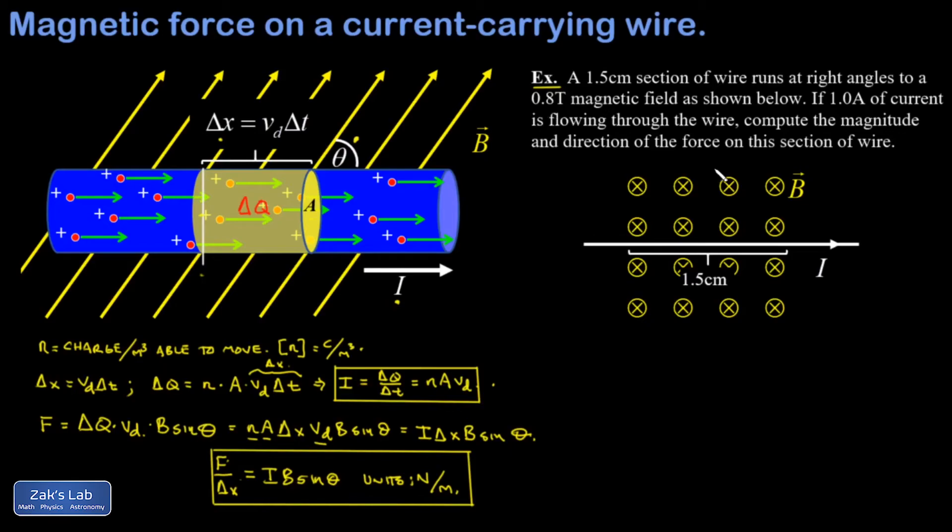So I'm given 1.5 centimeters of wire, running at right angles to a 0.8 tesla magnetic field. Well, that means the sine theta part is going to turn into a 1. I have 1 amp of current running in this wire, and I want to get the magnitude and direction of the force on this section of wire.